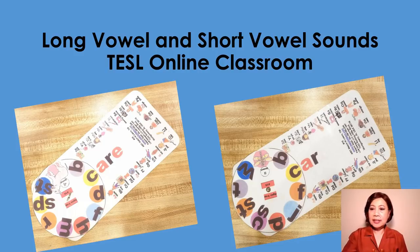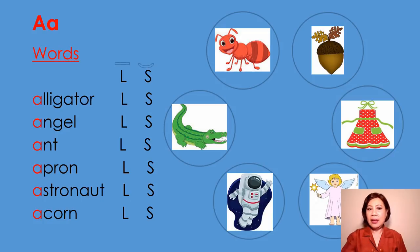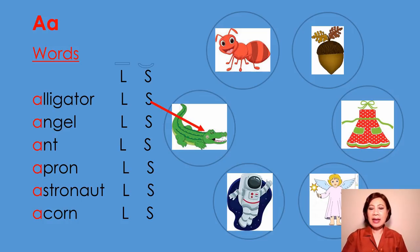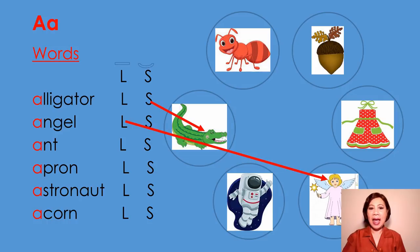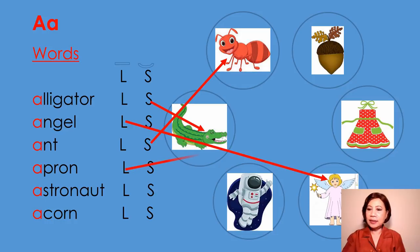Let's turn to the next slide — letter A. These are the words that begin with letter A. A says /a/ as in alligator. Alligator begins with short vowel sound. A says /ā/ as in angel. Angel begins with long vowel sound. A says /a/ as in ant. Ant begins with short vowel sound. A says /ā/ as in apron. Apron begins with long vowel sound.